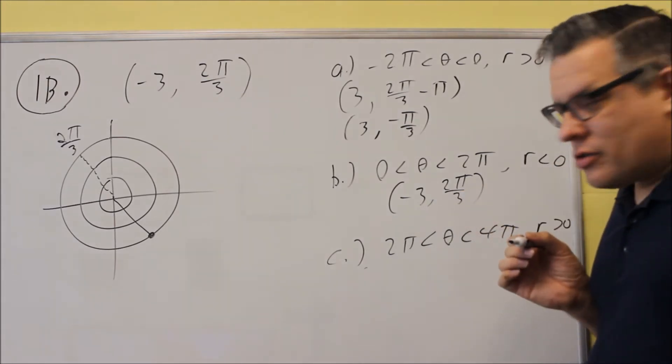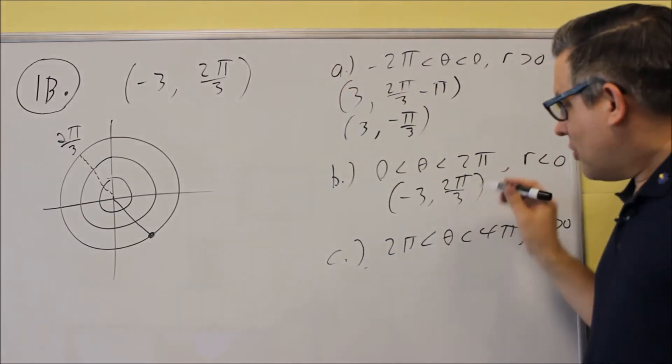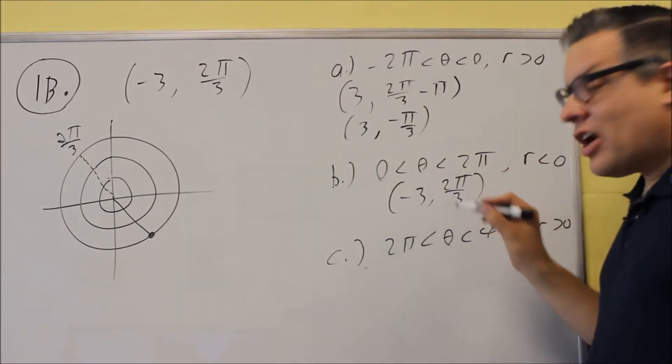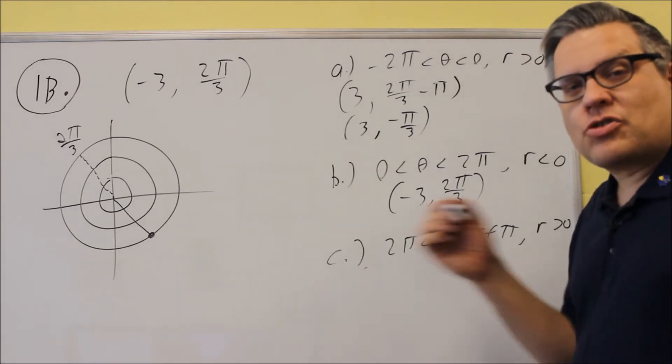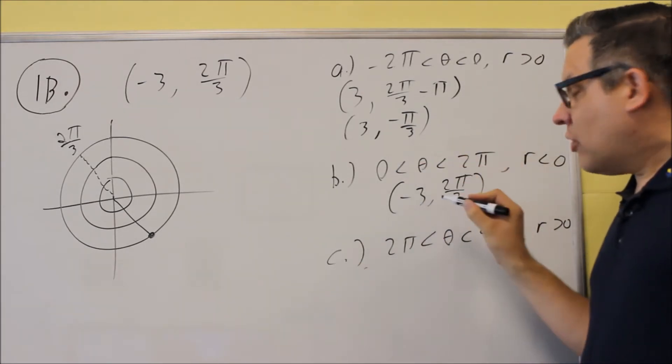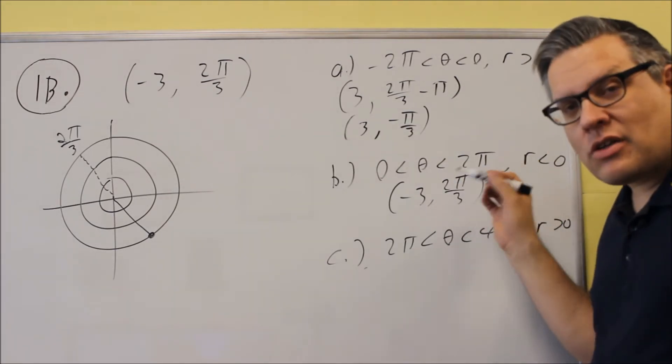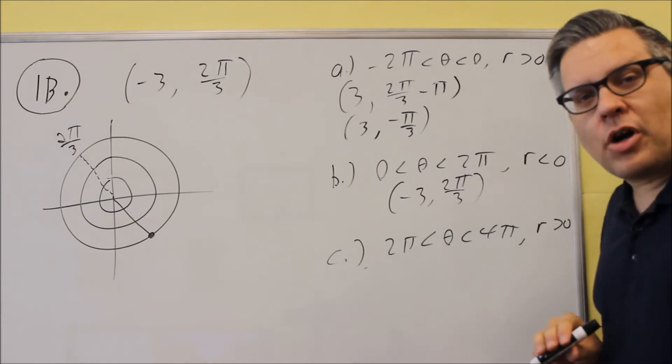So r is less than 0. It is. And the angle is between 0 and 2π. It is. So I'm not changing the sign of the r, and I don't have to worry about adding or subtracting 2π, because if I do, it would take it outside of the range between 0 and 2π. It already meets that. So again, don't need to do anything on part b.